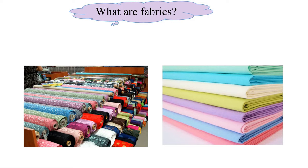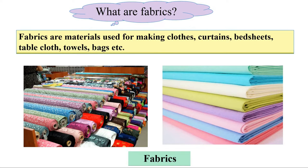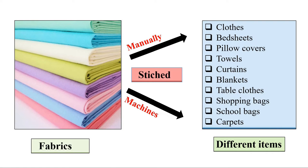Whenever you visit a garment shop, you must have noticed bundles of cloth lying there — these are called fabrics. These fabrics are stitched either manually, with the help of a sewing machine, or in machines in factories to get all these different items such as clothes, bed sheets, pillow covers, curtains, blankets, shopping bags, carpets, etc. So let's now try to understand about fabrics in more detail.